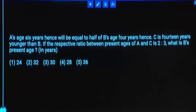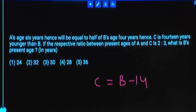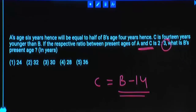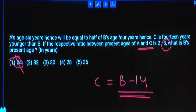A's age 6 years hence will be equal to half of B's age 4 years hence. C is 14 years younger than B, so C = B minus 14. The respective ratio between ages of A and C is 2 is to 3. What is B's present age? From B's present age, subtract 14 to get C's age. From the ratio, C's age should be a multiple of 3. So from B's age, subtract 14 — that should be a multiple of 3. Check options: subtract 14 from each. Only 32 minus 14 = 18, which is a multiple of 3.